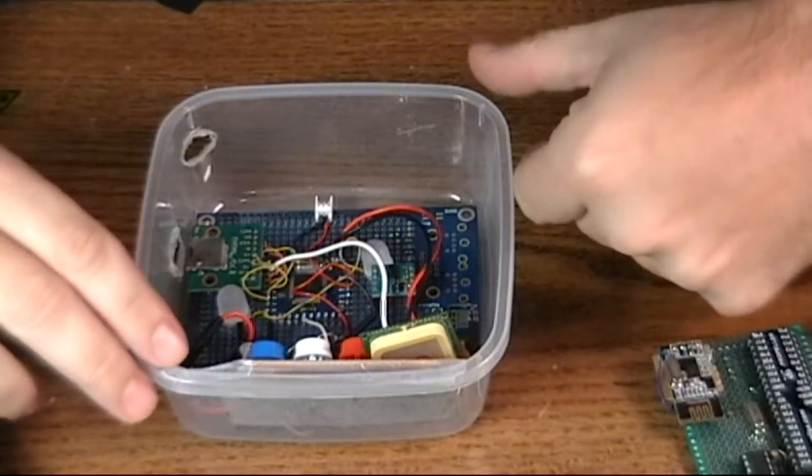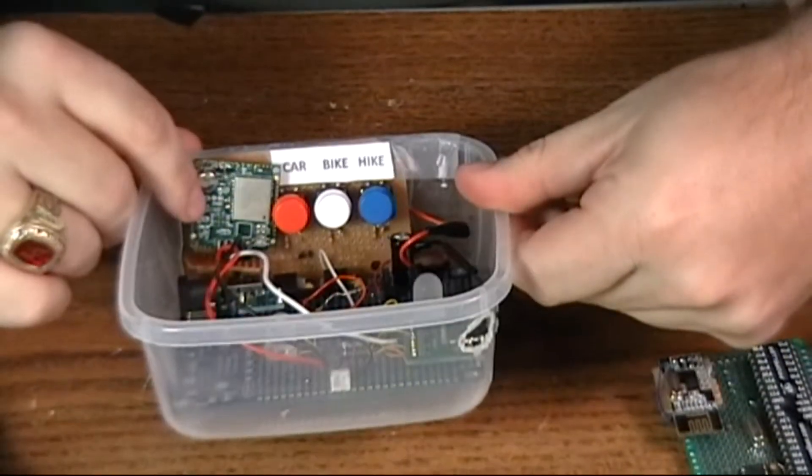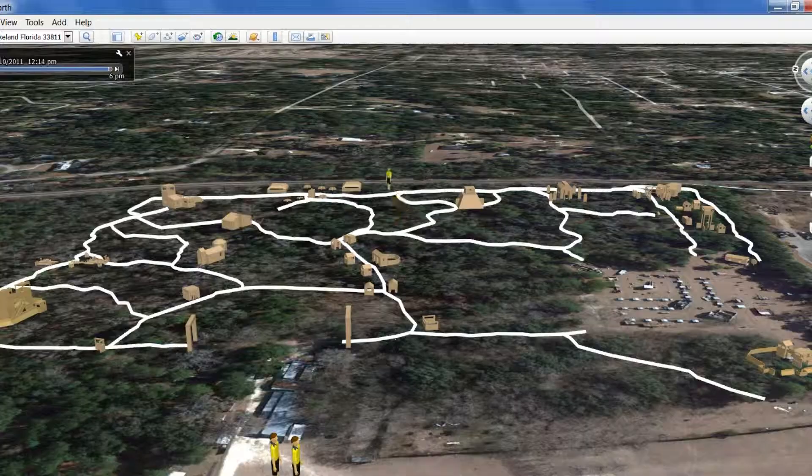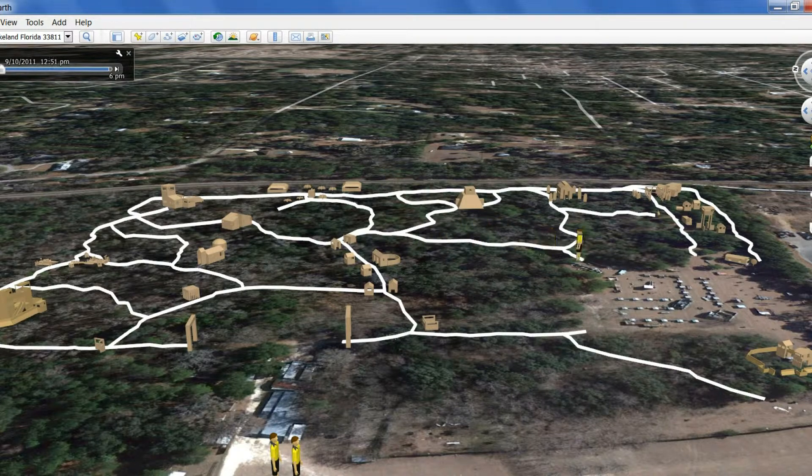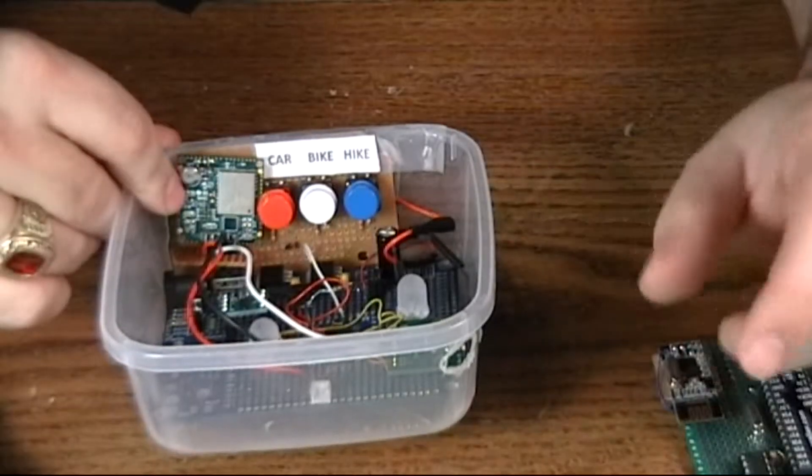I wrote the Propeller program so that it draws a model—either a car, bike, or person—for each of the data points. And each data point has a time span so that in Google Earth it looks like this model is just moving across the map.